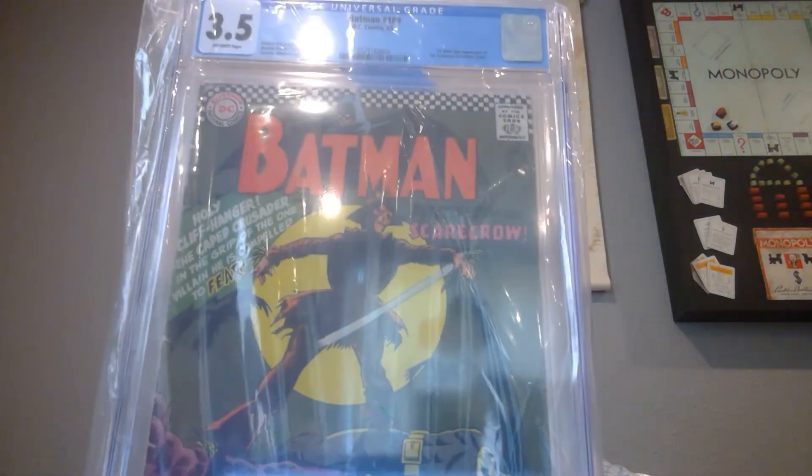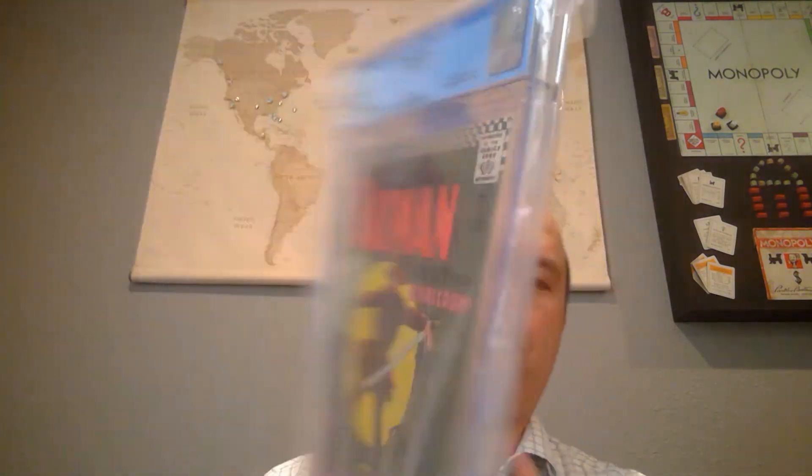This is Batman 189, first appearance of - yes that's right you guessed it - the first Silver Age appearance of Scarecrow. It's a 3.5 and it's got the checkerboard, this is during the time that DC was doing that. This is one that I've been wanting to get. I think he showed a preview of what he was going to be offering that night and I saw this and happened to get in and got it. This is some 12 cent goodness right there. Based on the spine it looks like it's beat to heck, probably wouldn't do any good to crack it open and try to look at it.